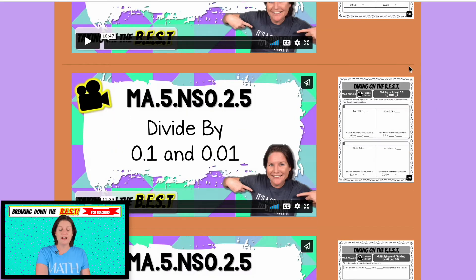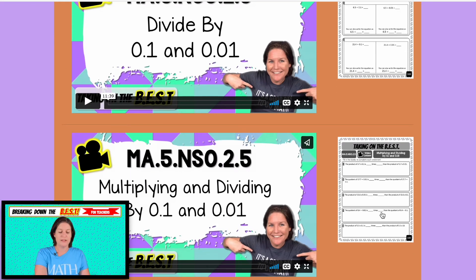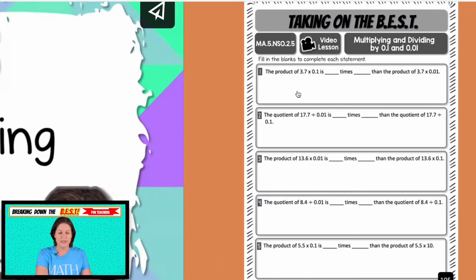Okay. So then we have dividing by one tenth and 100th, same kind of thing. And then multiplying and dividing by one tenth and 100th. And you can see here from the sheet that we are, that this is similar to the problem, the item that they gave us in the standard. I wanted to break that down head on of how you could tackle problems like that. Okay.